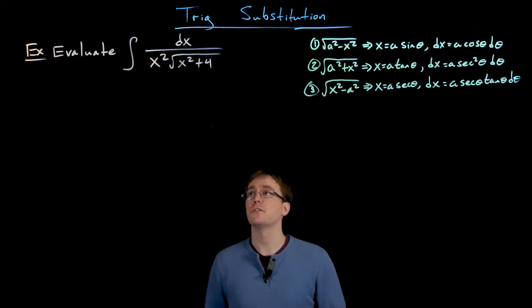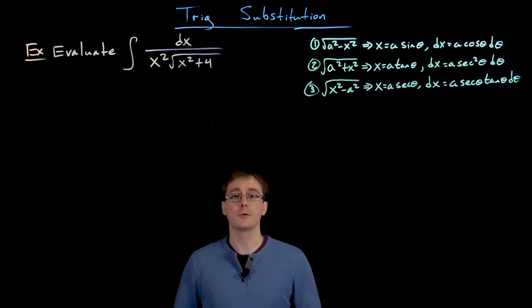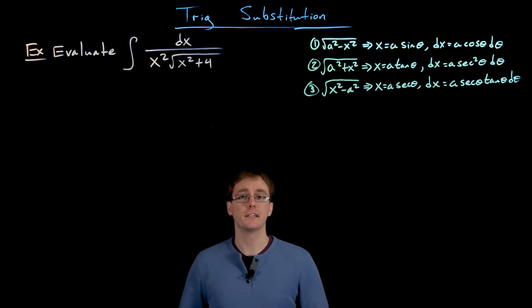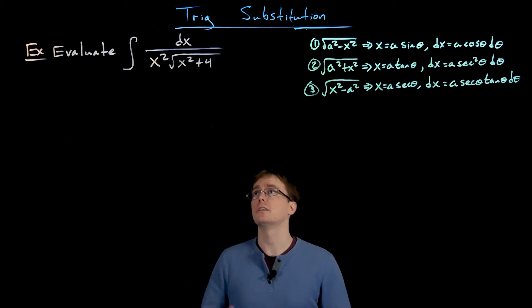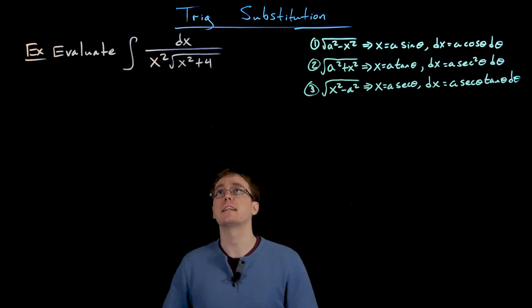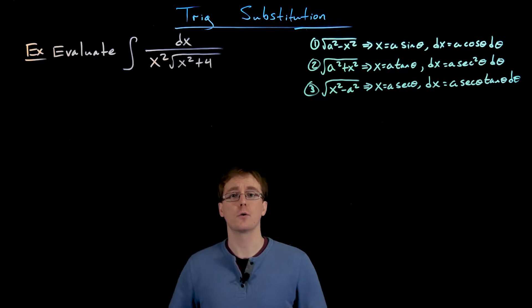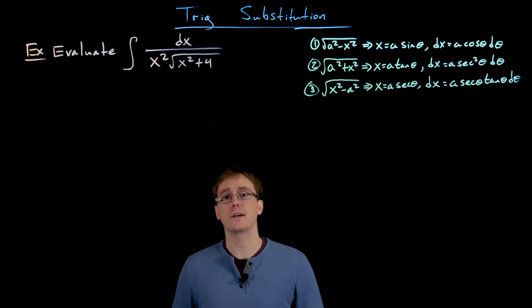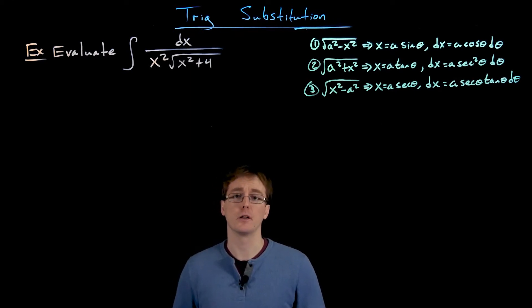Welcome back everyone. In this video we're going to look at another example of evaluating an indefinite integral using trigonometric substitution. Here we're interested in finding the antiderivative of the function 1 over the quantity x squared multiplied by the square root of x squared plus 4.